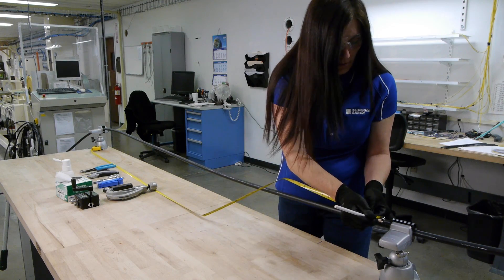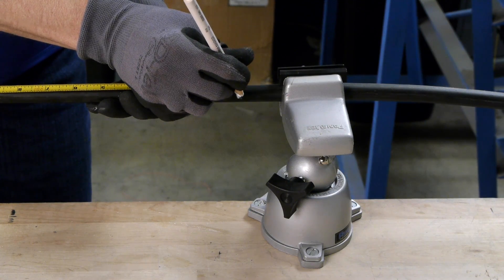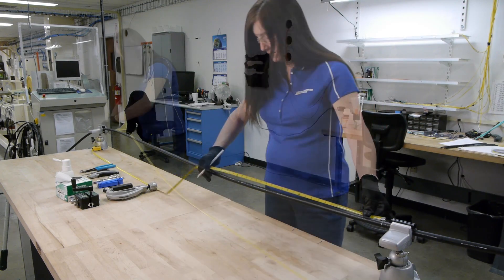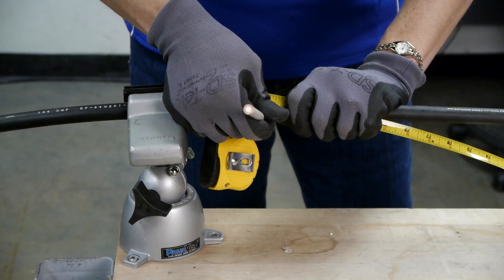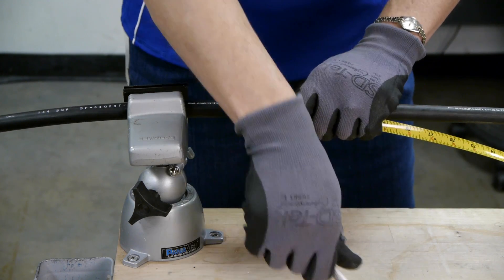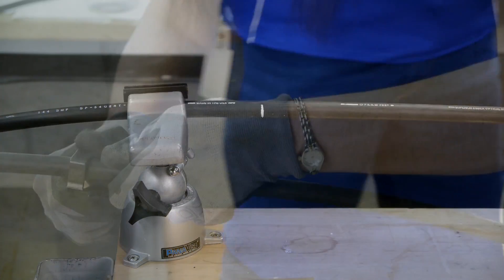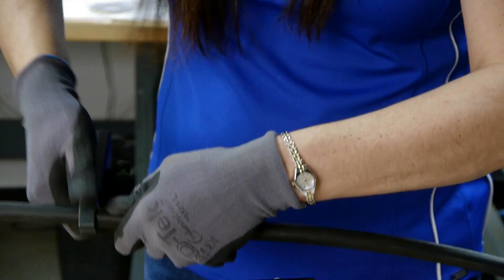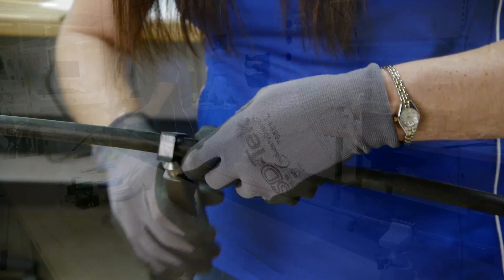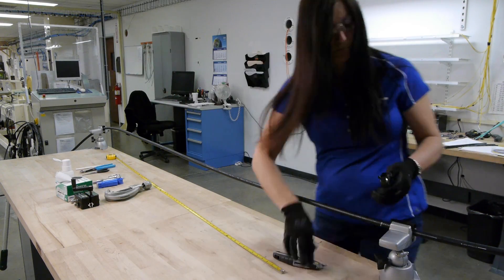Secure cable in clamping device and measure and mark cable to the desired length per the closure manufacturer's recommendation. With a rotary jacket cutting tool or hook blade razor knife, score jacket at both marks.